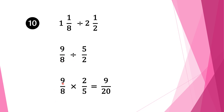Now we have a normal fraction division. We write down our first fraction 9 over 8, change the division sign into multiplication, and take the reciprocal of the second fraction. It is 5 over 2, so we write it down as 2 over 5. We check whether we can cancel anything — we can cancel 2 and 8. So 2 goes into 2 once, and 8 goes into 2 four times. We multiply our numerators: 1 times 9 is 9, and our denominators: 5 times 4 is 20. So our final solution is 9 over 20.